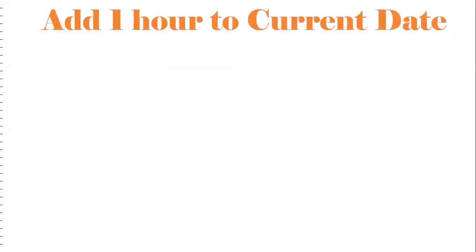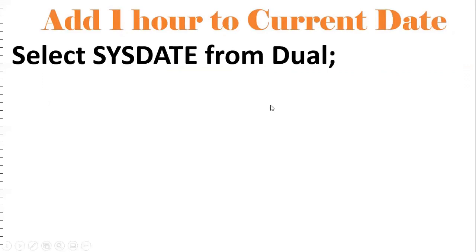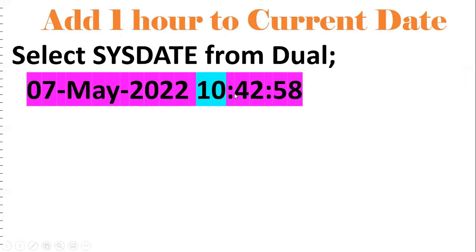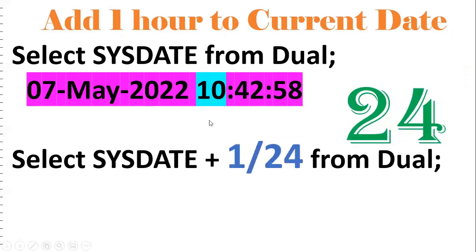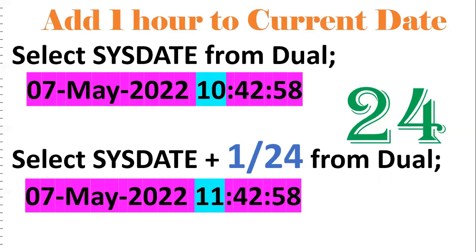My requirement is that I want to add one hour to the current date. We use SYSDATE for the current date. The current time is 10:42:58 and I want to make it 11:42:58. We know that in a day we have 24 hours, so to add one hour we do SYSDATE + 1/24. That will add one hour, converting 10:42 to 11:42:58. To add two hours: 2/24; five hours: 5/24. To add one full day: SYSDATE + 1. To subtract one hour: SYSDATE - 1/24, giving 9:42:58.